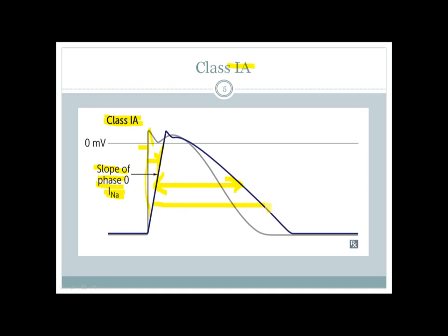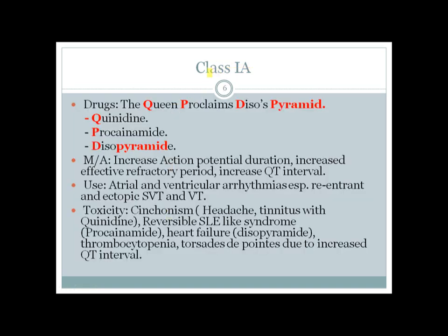There are three main class 1a drugs, remembered by the mnemonic 'Queen Proclaims Diso's Pyramid': Quinidine, Procainamide, and Disopyramide. The mechanism is sodium channel blockade, which increases action potential duration and increases effective refractory period. On ECG this appears as an increase in QT interval.